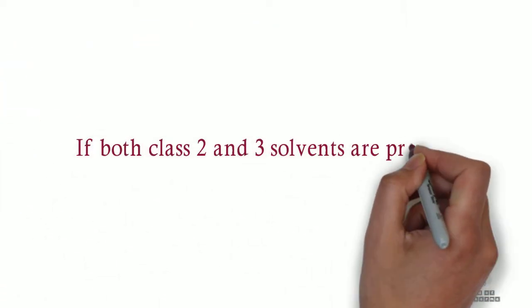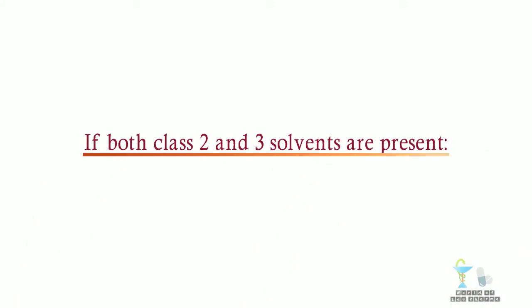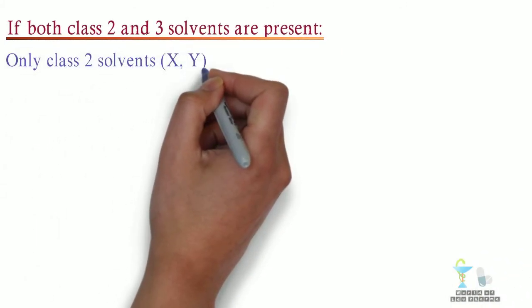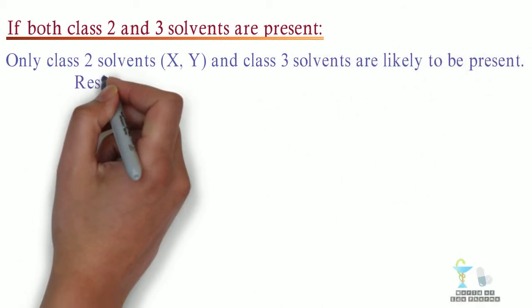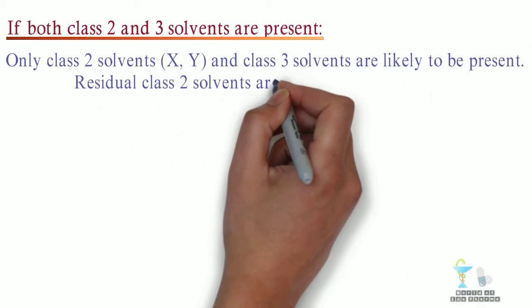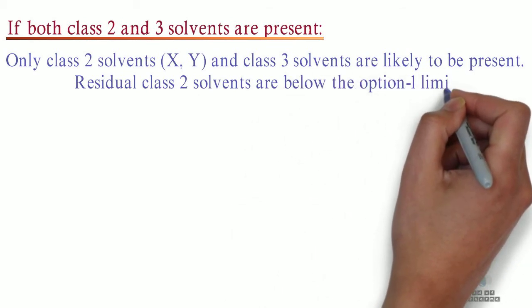If both class 2 and 3 solvents are present, then: only class 2 solvents x, y, and class 3 solvents are likely to be present. Residual class 2 solvents are below the option 1 limit, and residual class 3 solvents are below 0.5%.